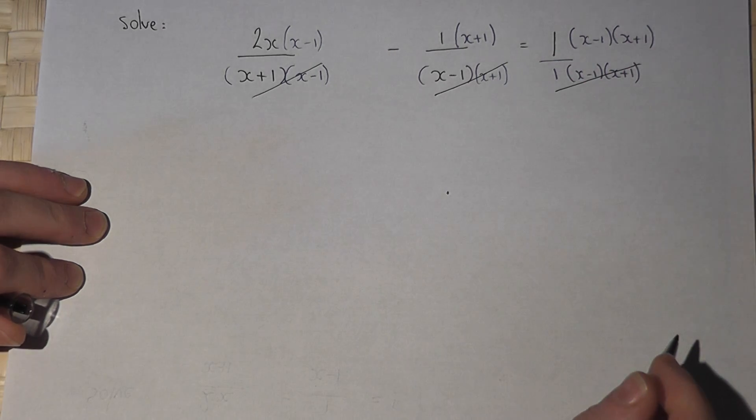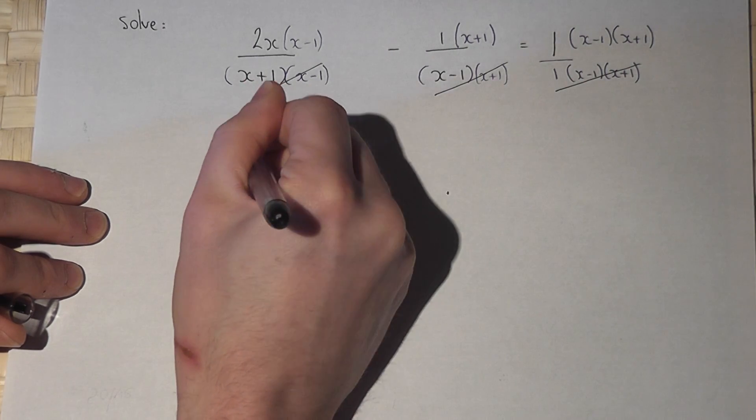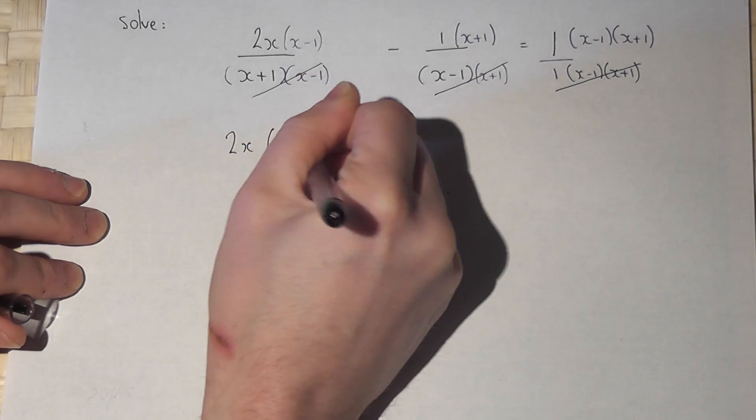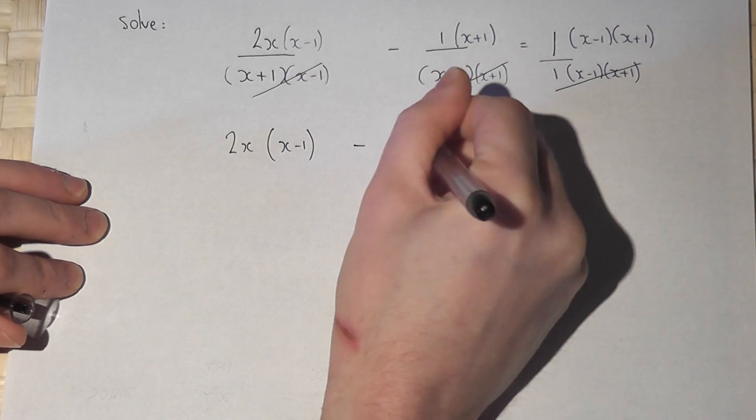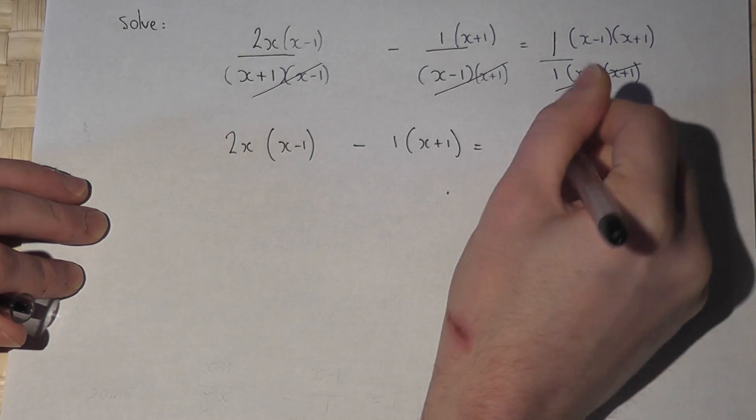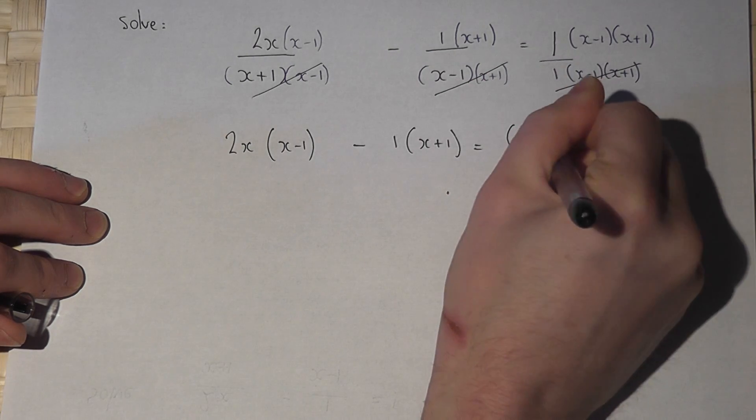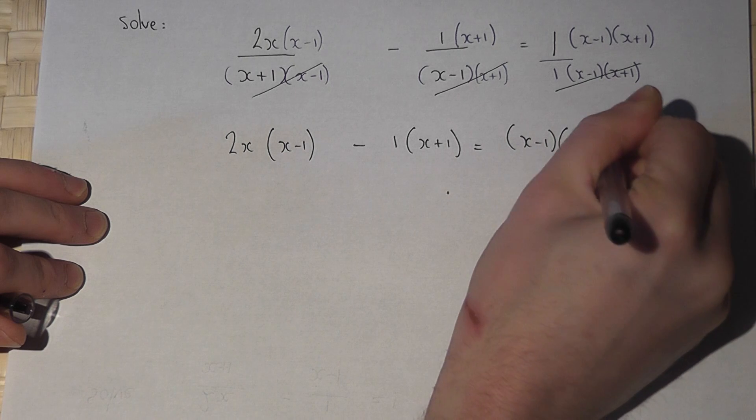So the equation becomes 2x times x minus 1, take away 1 lot of x plus 1, equals 1 lot of x minus 1 times x plus 1.